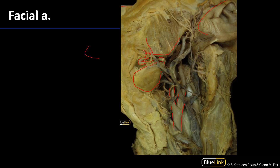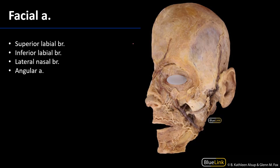The facial artery then continues medially and ascends superiorly on the face. In this illustration we can see the masseter, the parotid duct coming across, and right there is where the facial artery is emerging onto the jaw. As we can see it's rather tortuous, winding its way medially and superiorly, and one of its first branches is the inferior labial branch, which serves the jaw as well as the lower lip.